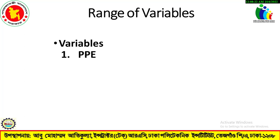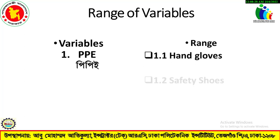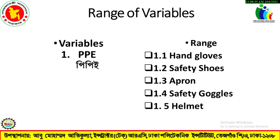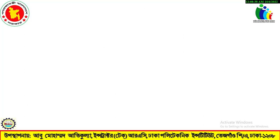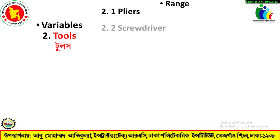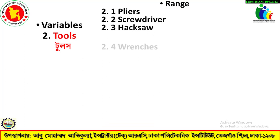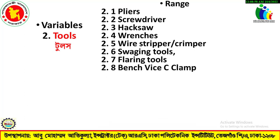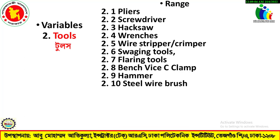Range of Variables. Number one, PPE: range includes gloves, safety shoes, apron, safety goggles, and helmet. Number two, Tools: pliers, screwdriver, hexo wrench, stripper or crimper, sizing tools, flaring tools, bench vice, C-clamp, hammer, steel wire brush, tube cutter, tube bender.